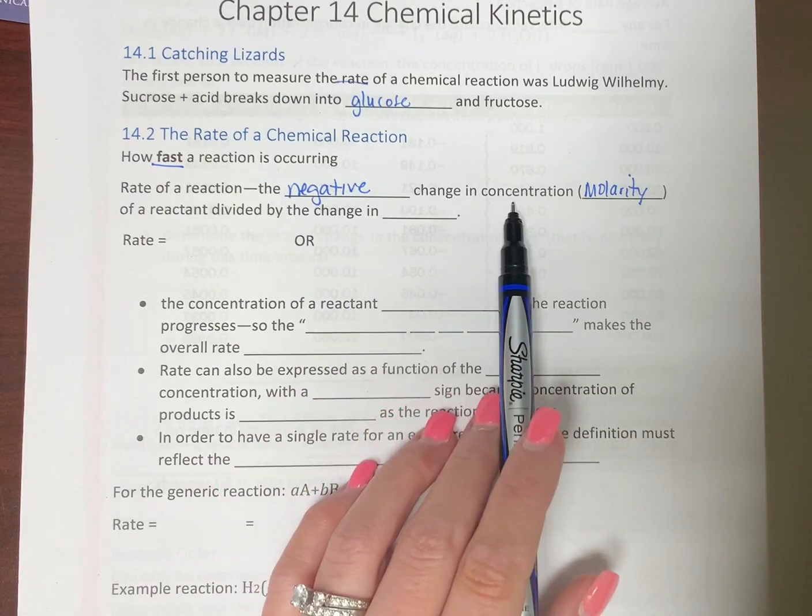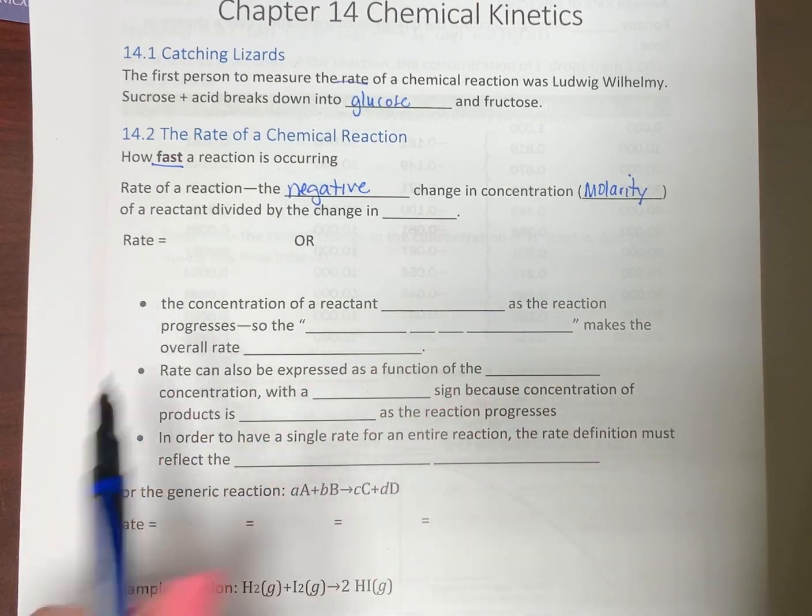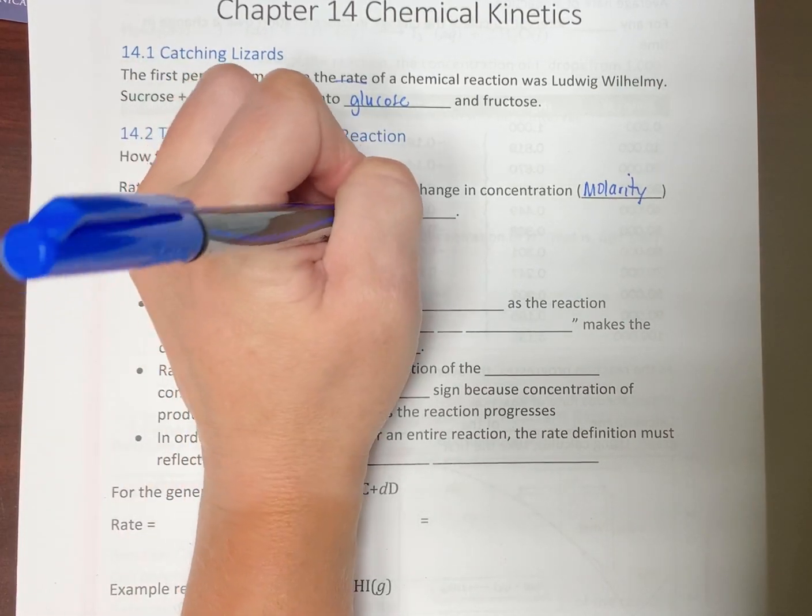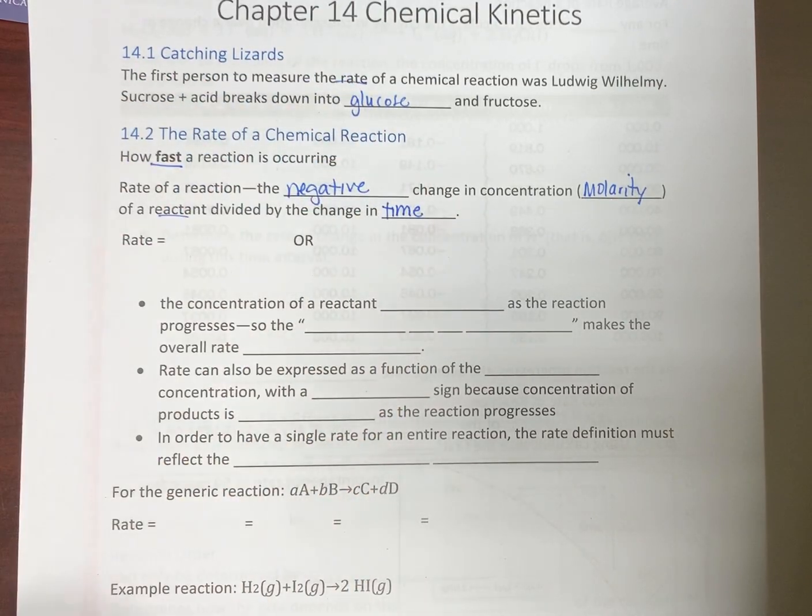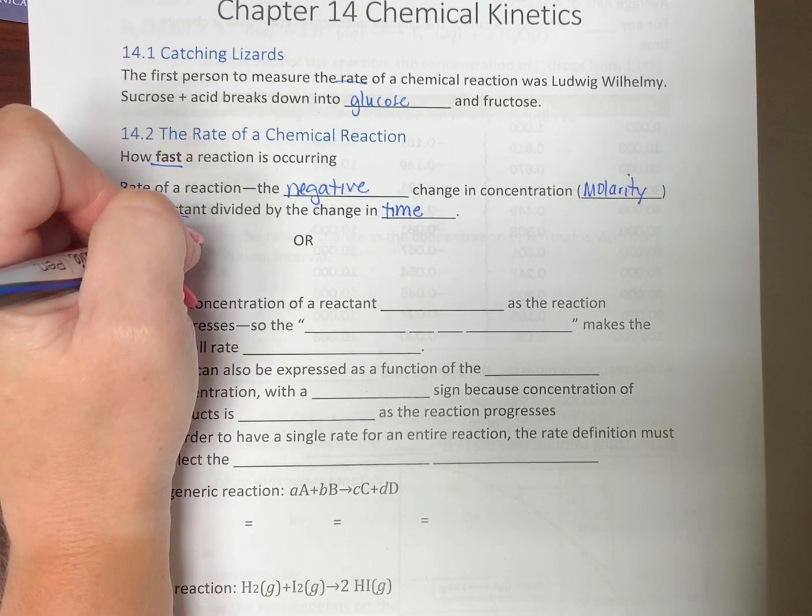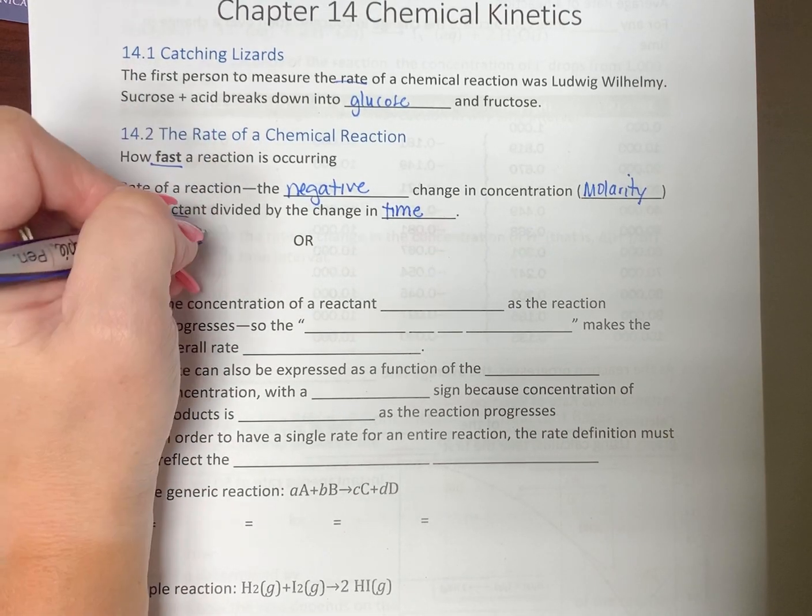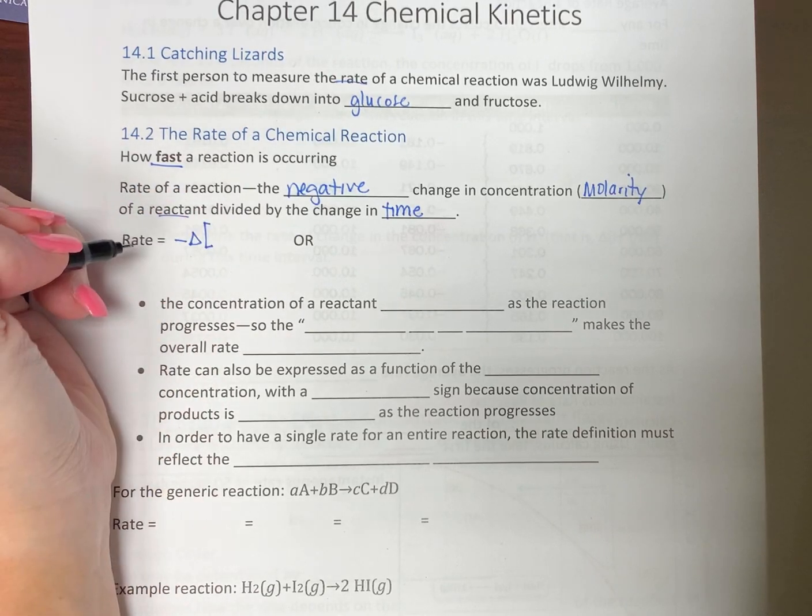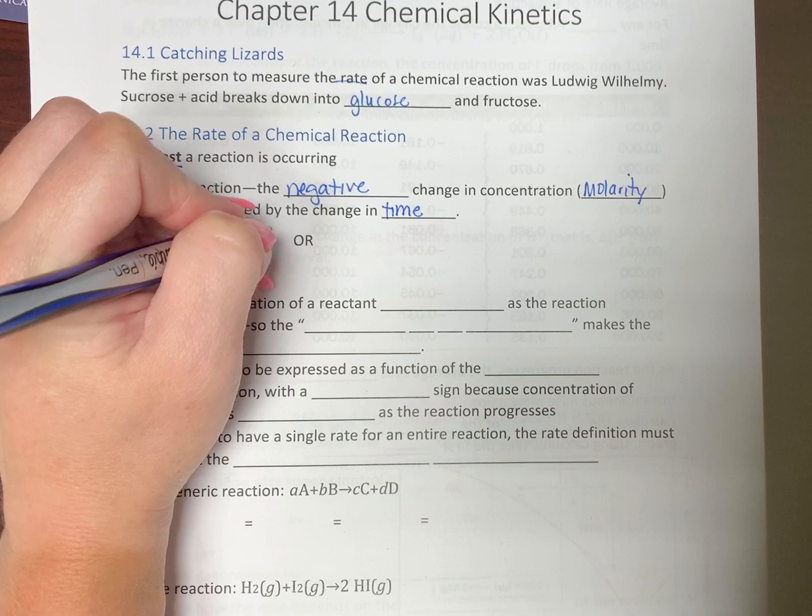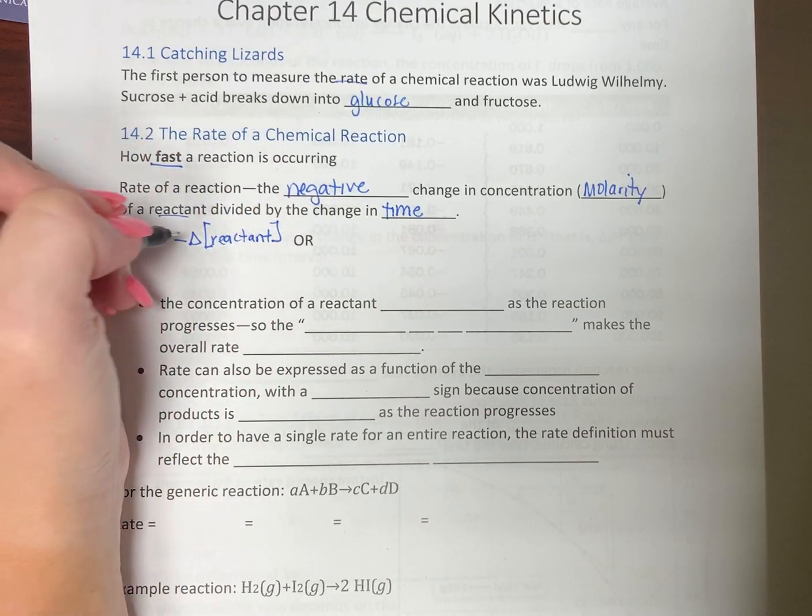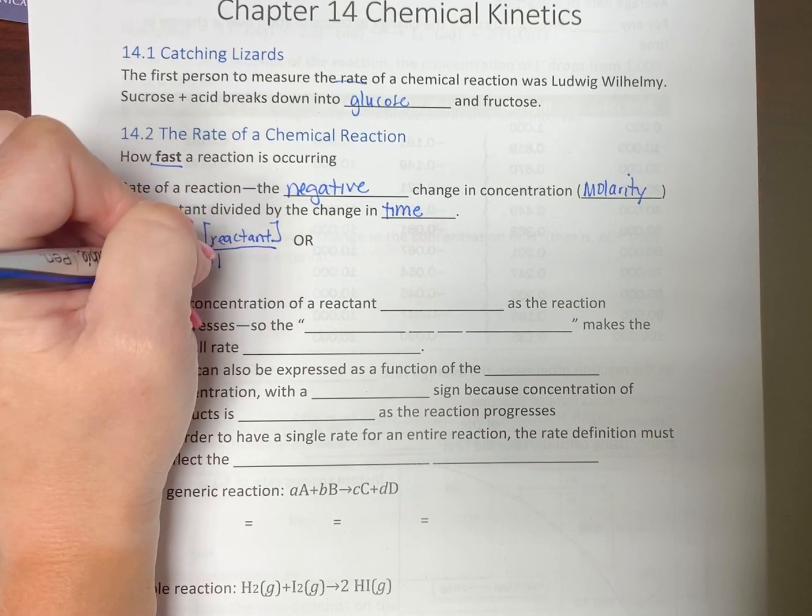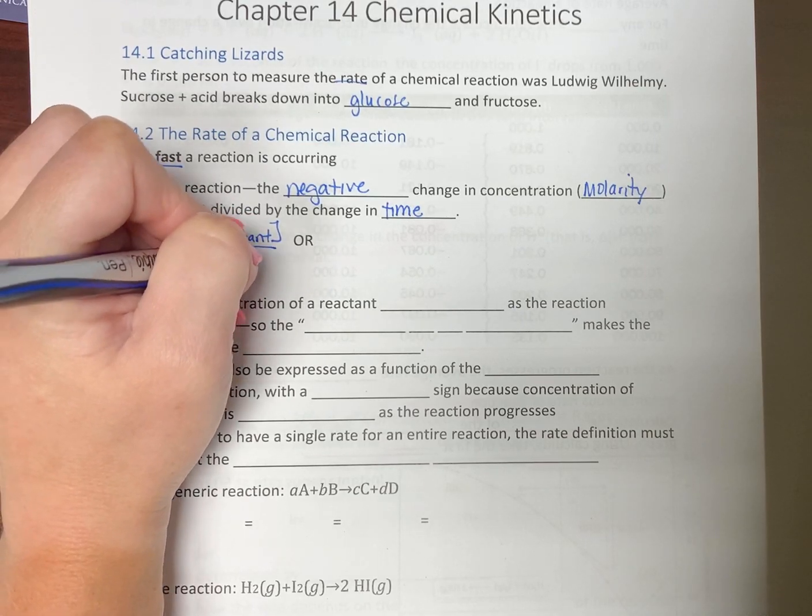Negative change in the concentration of a reactant divided by the change in time. Rate equals negative change. Now, concentration in chemistry, we're going to use brackets. So concentration of the reactant, that's how you read that. I have reactant in brackets, that means concentration. Negative change over change in time.